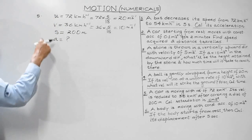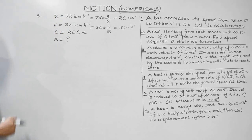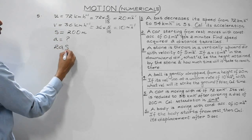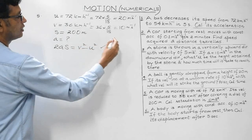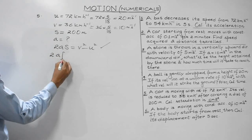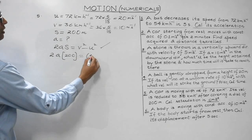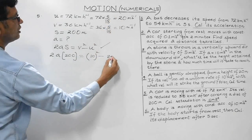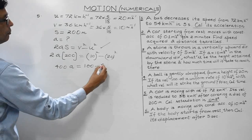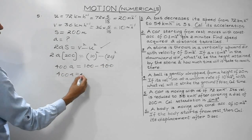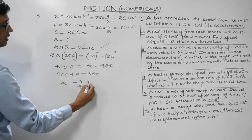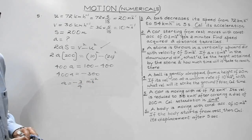Which equation connects u, v, S, and a? The third equation: 2aS = v² - u². Substituting: 2 × a × 200 = 10² - 20² → 400a = 100 - 400 = -300 → a = -300/400 = -3/4 m/s².